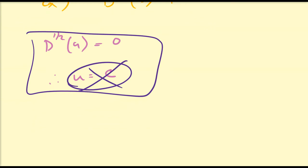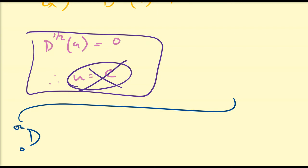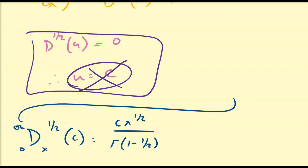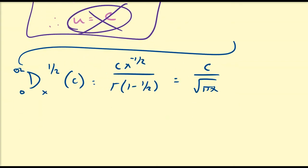Let us look at a particular half-derivative of a constant. If I compute GL_0^x [1/2] {c}, this is going to be equal to c times x^(−1/2) divided by Γ(1/2). We know that Γ(1/2) is equal to the square root of π, so this is just c divided by √(πx). Looking at the right-hand side — since we're choosing values larger than 0 — we can see this has a vertical asymptote at x = 0.